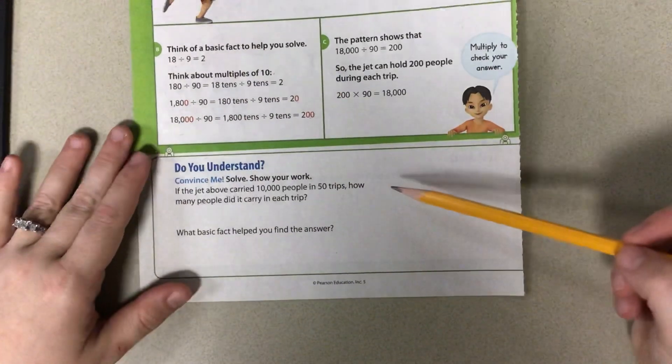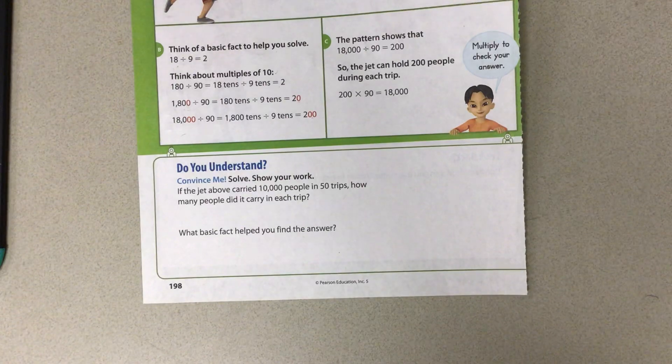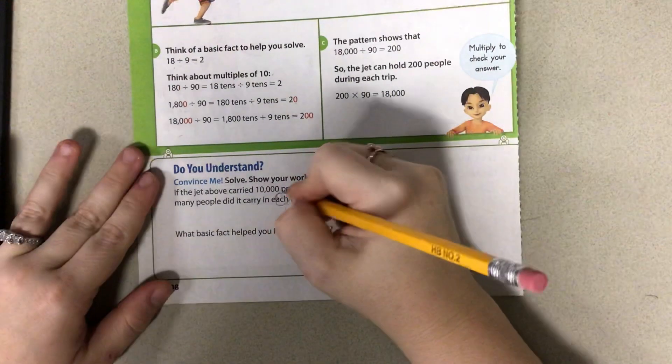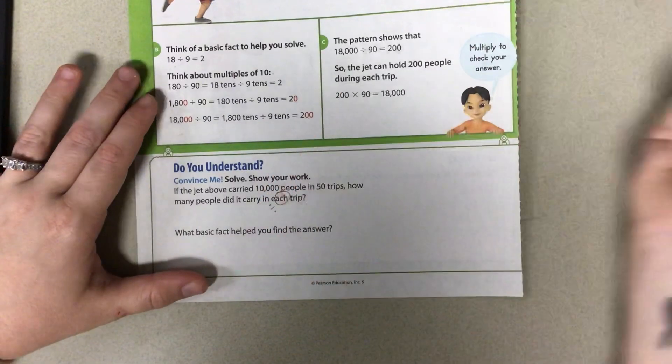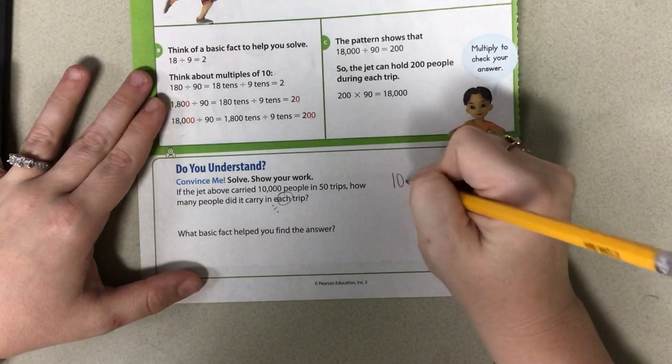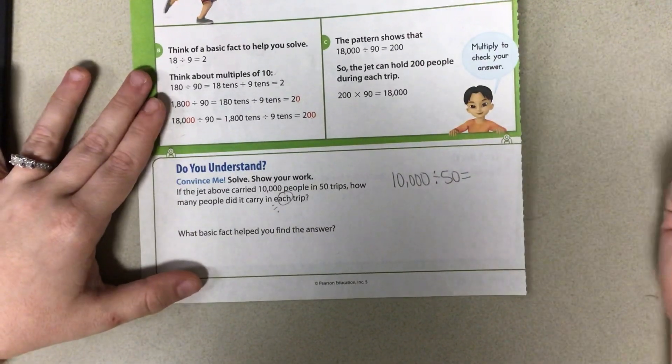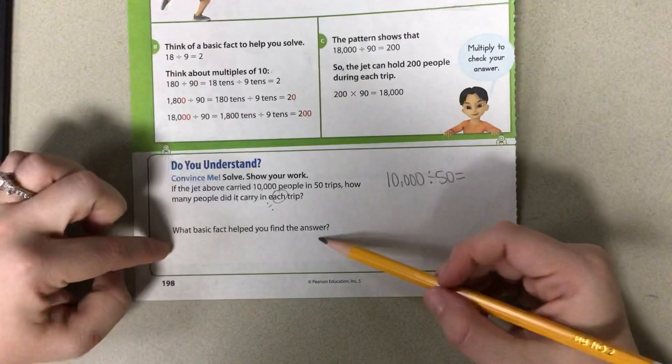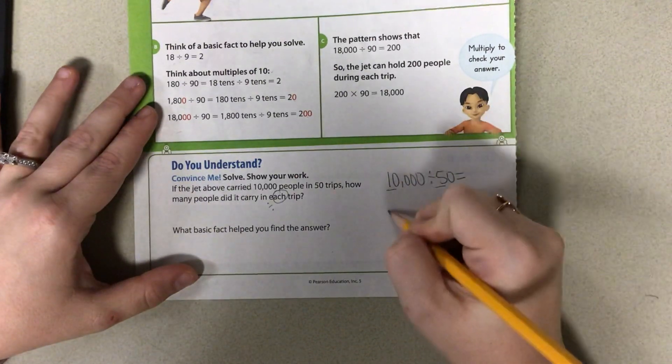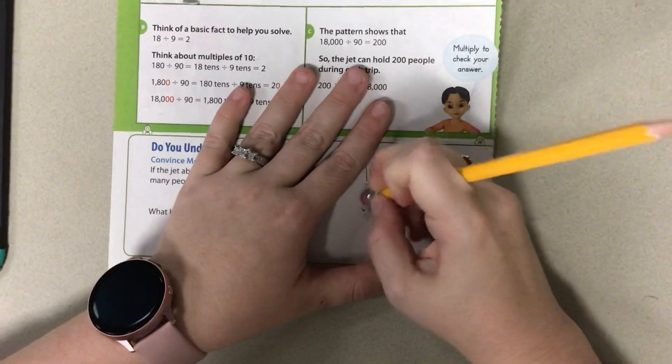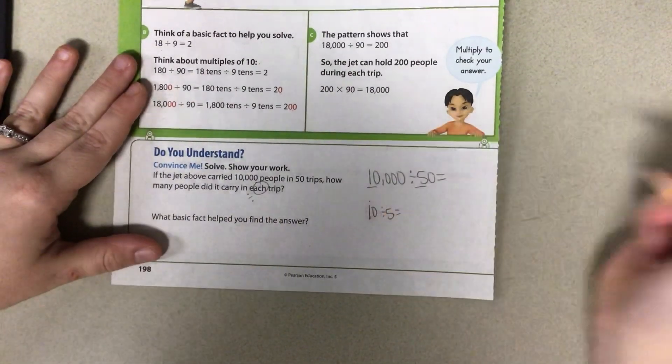If the jet above carried 10,000 people in 50 trips, how many people did it carry each trip? So we have that each word again. We're putting people into planes, so therefore we're dividing. We know our problem is going to be 10,000 divided by 50 equals our answer. What basic math fact helped you? We're going to start with the beginning. We have a 10 and a 5. So if I do 10 divided by 5, what does that give me? 2.